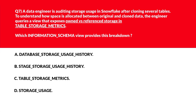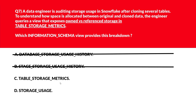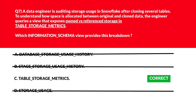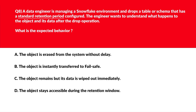This question is about owned versus reference storage in the table storage matrix. Option A says database storage usage history — database storage usage history lacks granularity for cloned table metrics, incorrect. Option B says stage storage usage history — stage storage usage history is unrelated to table cloning, eliminated. Option C says table storage matrix — table storage matrix shows separate columns for owned and reference storage, let's keep it. Option D says storage usage — storage usage doesn't expose ownership breakdown, wrong. We'll lock option C, table storage matrix, as the right answer.